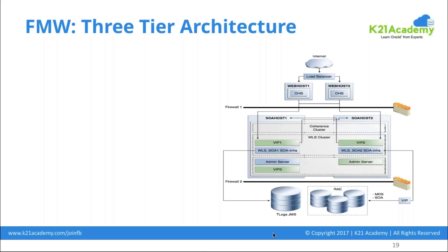At the database tier level there are also T-logs and JMS — transaction logs and Java Messaging Service — which we'll cover in the SOA module. By default, T-logs and JMS can be in a file-based repository on the application tier, or inside the database. For high availability you decide whether to put them into a cluster file system or into the database.